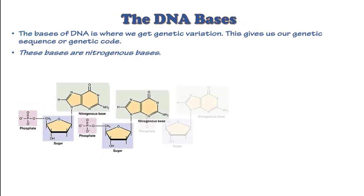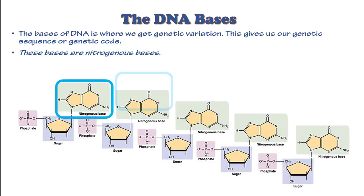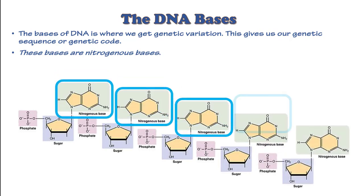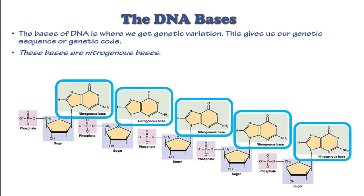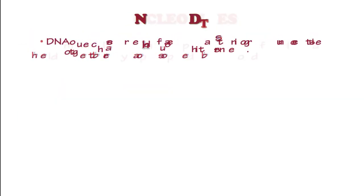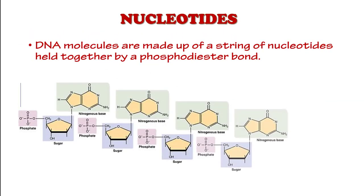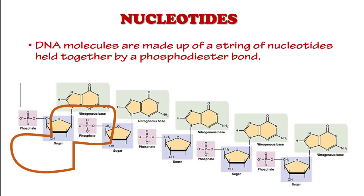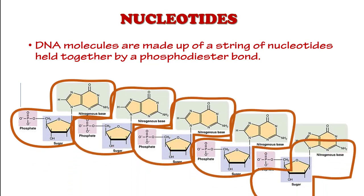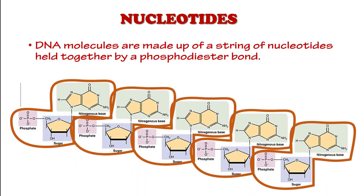The bases of DNA are where we get genetic variation. This gives us our genetic sequence or genetic code. These bases are nitrogenous bases. DNA molecules are made up of a string of nucleotides held together by phosphodiester bonds.